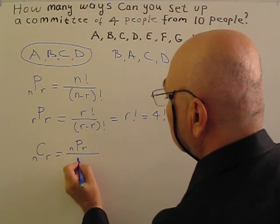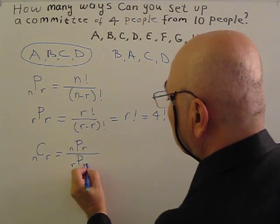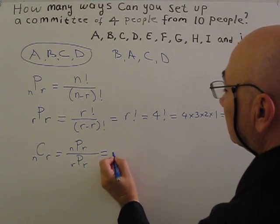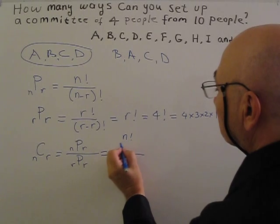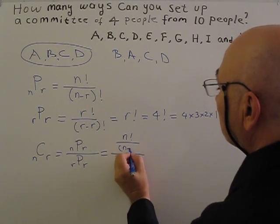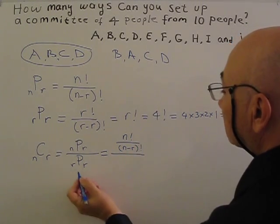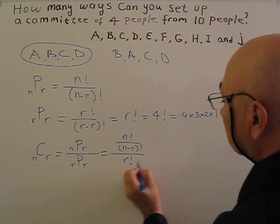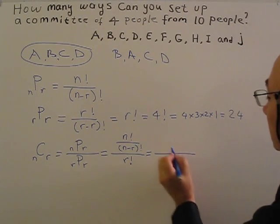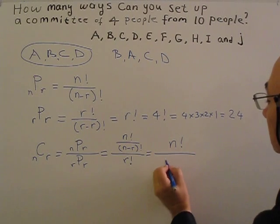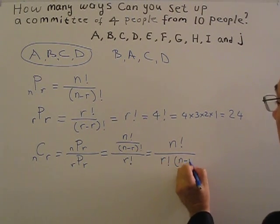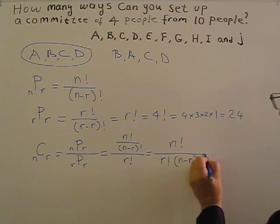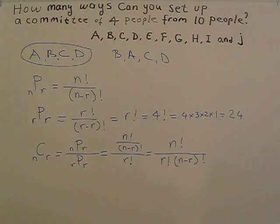N, P, R divided by R, P, R. What is N, P, R? This one: N factorial over N minus R factorial. This is R factorial. So I get N factorial over R factorial times N minus R factorial. Yes, this is the combination formula.